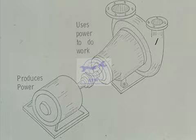Machines that can produce power are made separately from machines that use power to do some form of work. Machines that produce power are called drivers. Examples would include electric motors, turbines, and gasoline engines.